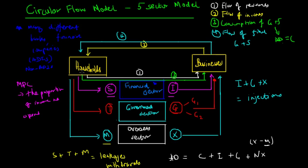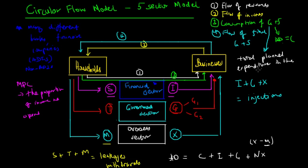Flow three, which encompasses the blue, light blue, red, pink, and green flows, represents the total value of expenditure in the economy. It is not just consumption of goods and services but the total planned expenditure in the entire economy — C plus I plus G plus X minus M, or net exports NX.